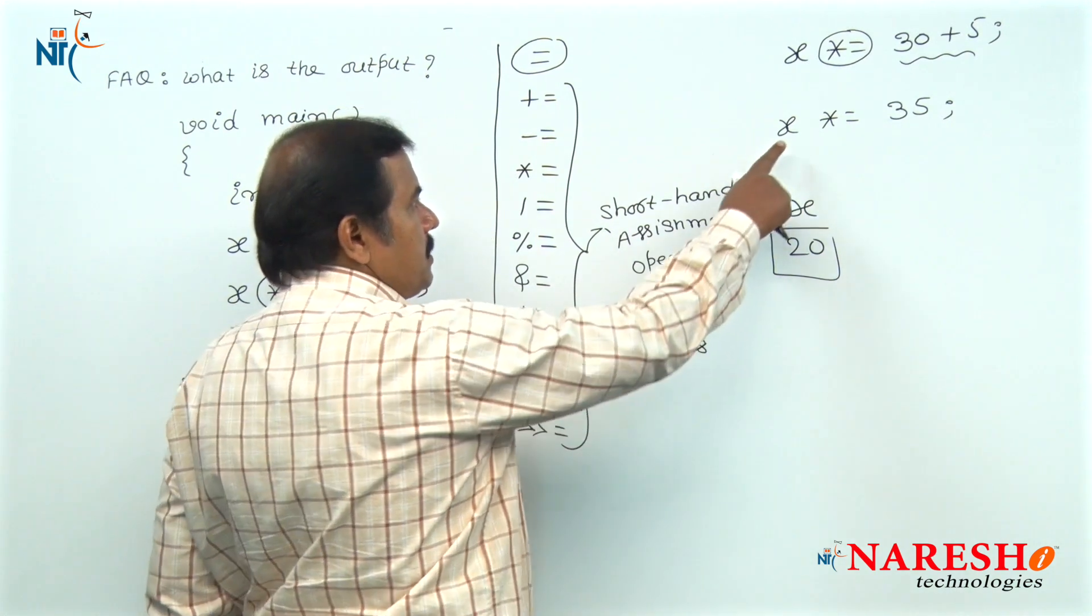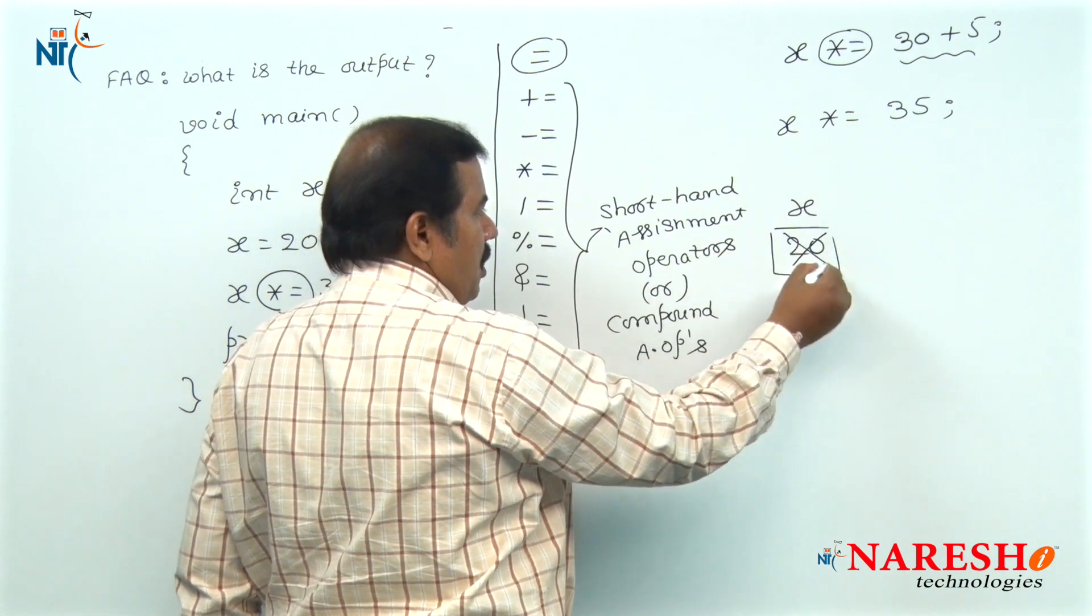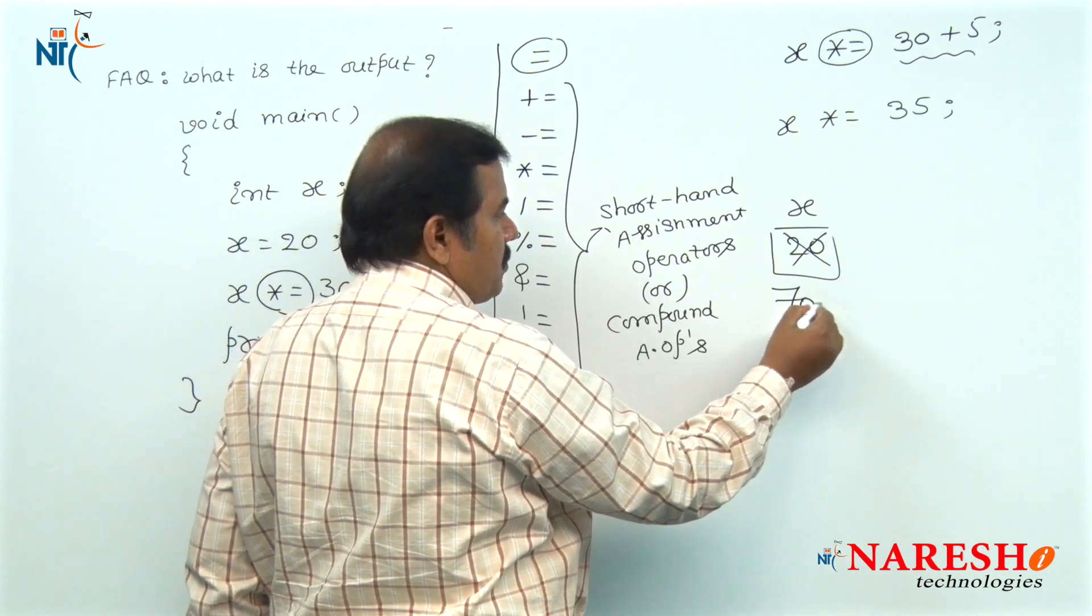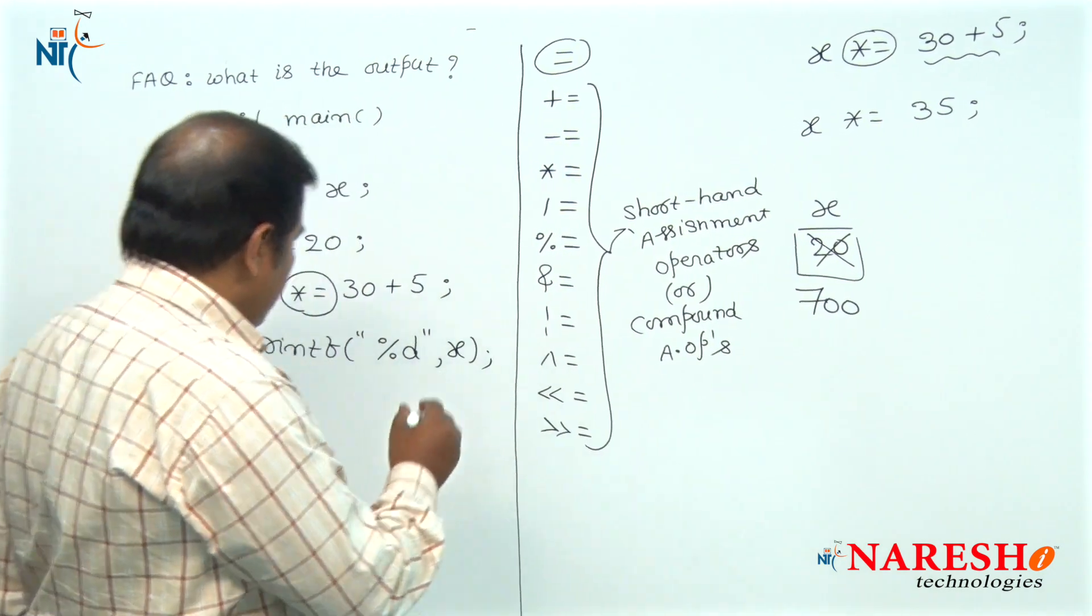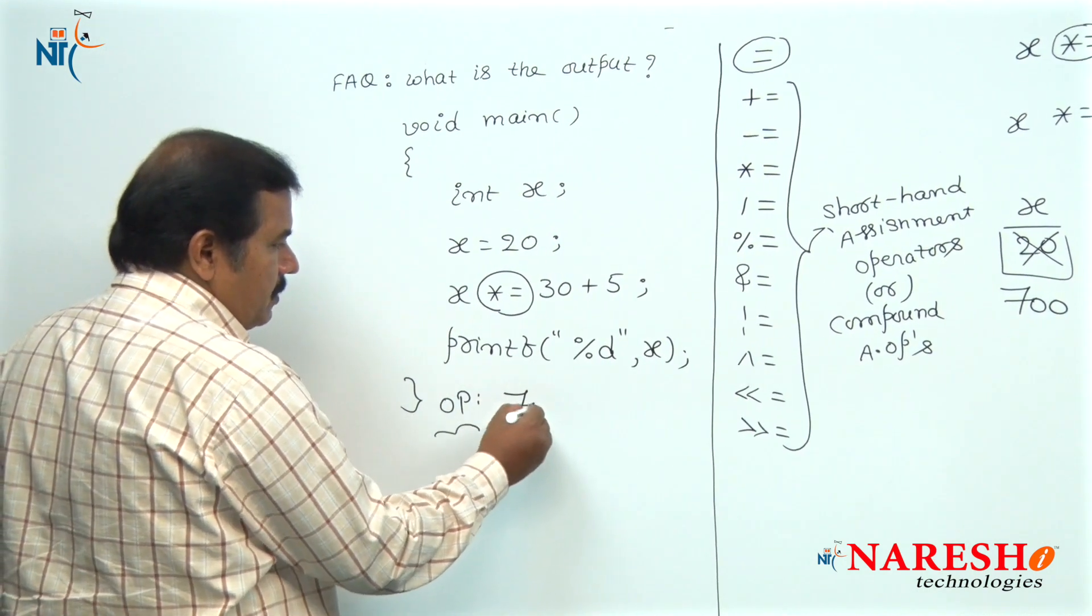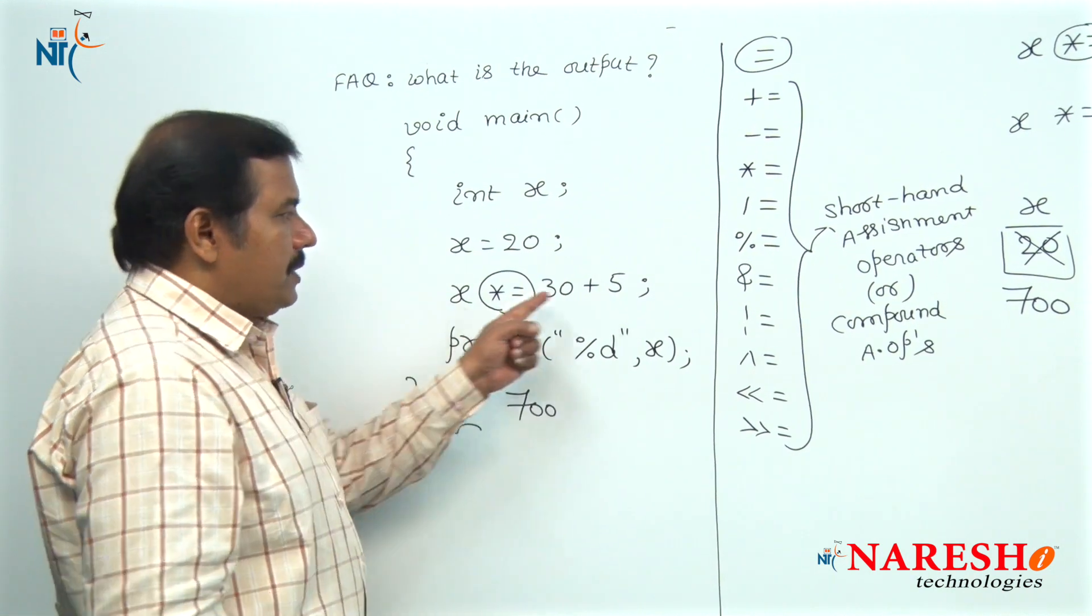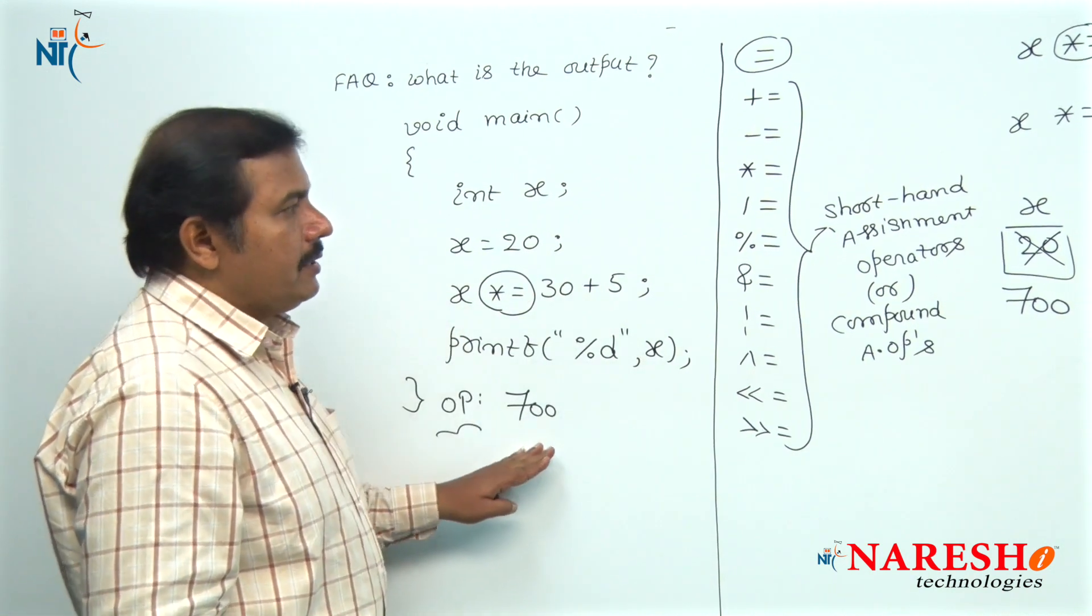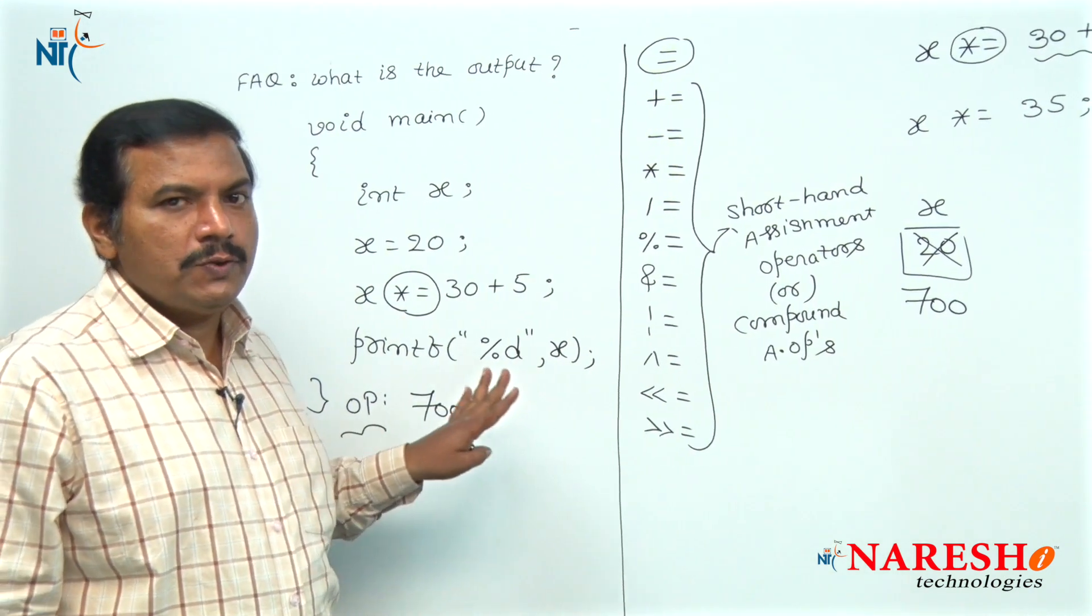The obtained resultant is stored inside left side operand of this assignment operator. Now, the value of x becomes 700. Hence, the final output of this given code is 700 because here we are printing the value of x. After executing this statement, the x value becomes 700, and 700 is displayed onto the screen.